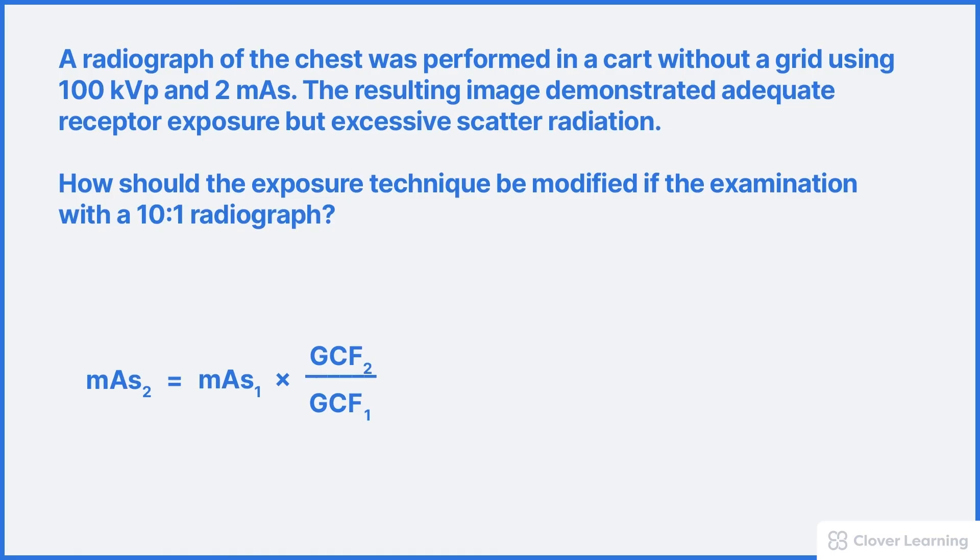This is necessary to ensure the scatter is decreased while maintaining the same receptor exposure. The kVp should not be changed. So we'll start with the formula and insert all known variables. The formula is mAs2 equals mAs1 times grid conversion factor 2 over grid conversion factor 1. The original mAs was 2. The new grid conversion factor for a 10 to 1 grid is 5. The original grid conversion factor for no grid is 1. To calculate mAs2, that's the new mAs, we simply follow the math in the formula. The new mAs, that's mAs2, is equal to 2 times 5 divided by 1 which equals 10 mAs. That's all there is to it. There's no additional steps.